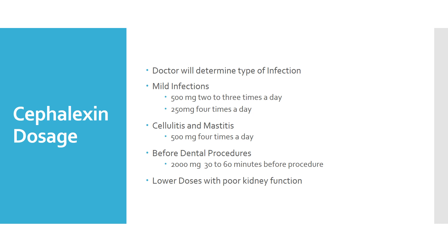The dosage varies — the doctor will determine the type of infection you have and come up with a dosage. Generally, we see it dosed at 500 milligrams two to three times a day. Sometimes they'll do 250 milligrams four times a day, because the level in the body is better with more frequent dosing.